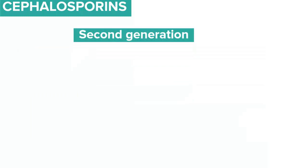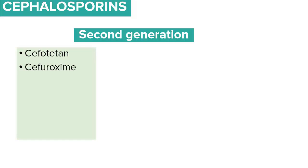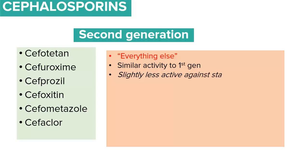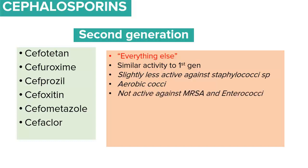The second-generation cephalosporins include cefotetan, cefuroxime, cefprozil, cefoxitin, cefmetazole, and cefaclor. They have a similar activity to first-generation cephalosporins but with slightly less activity against staphylococci and aerobic cocci. They are not active against MRSA or enterococci, but cover more non-enterococcal streptococci.